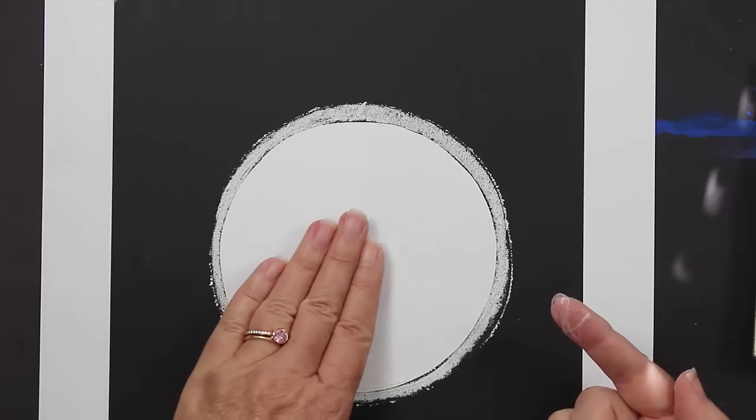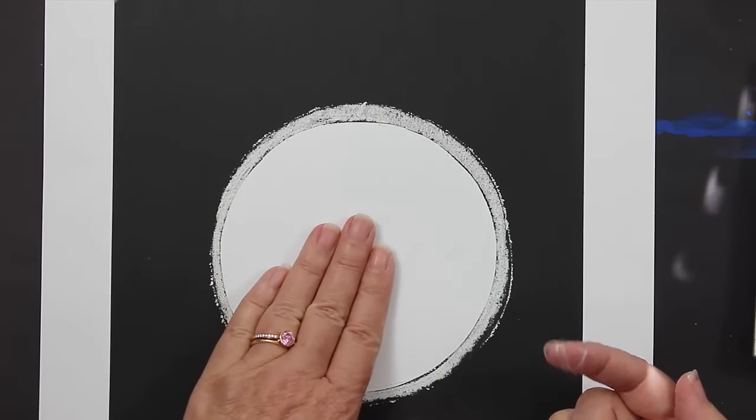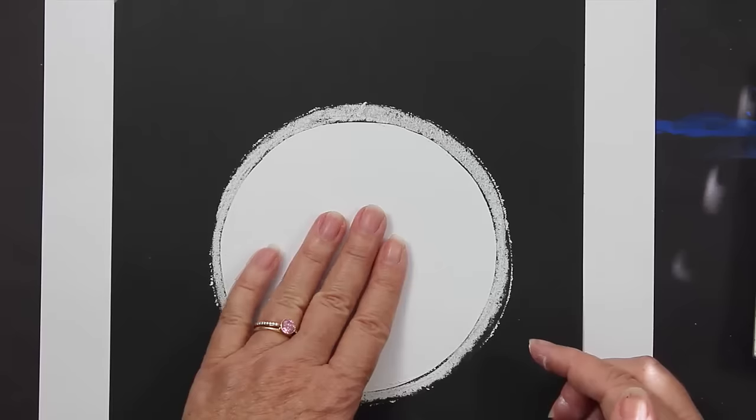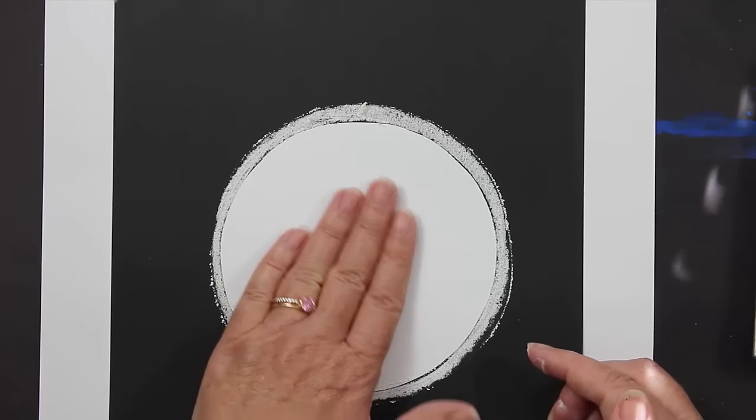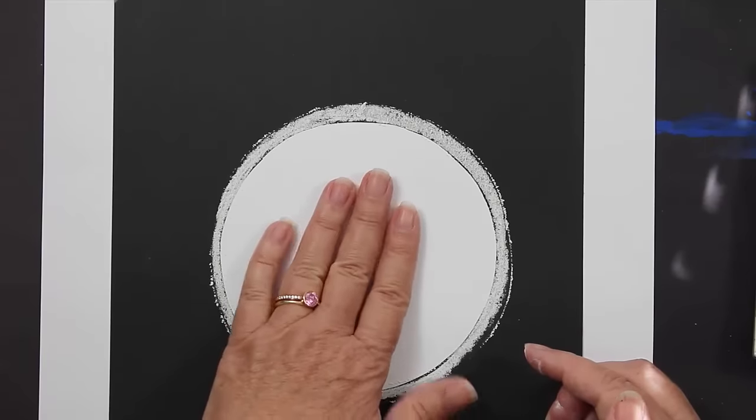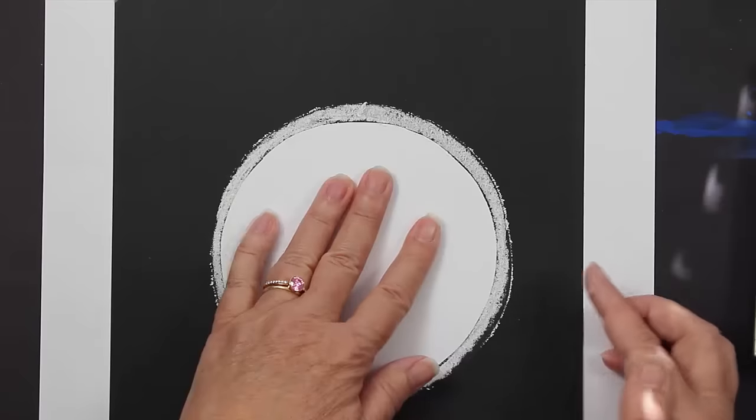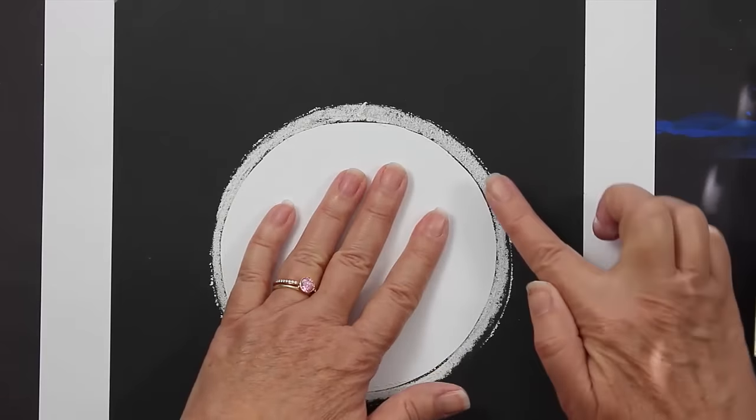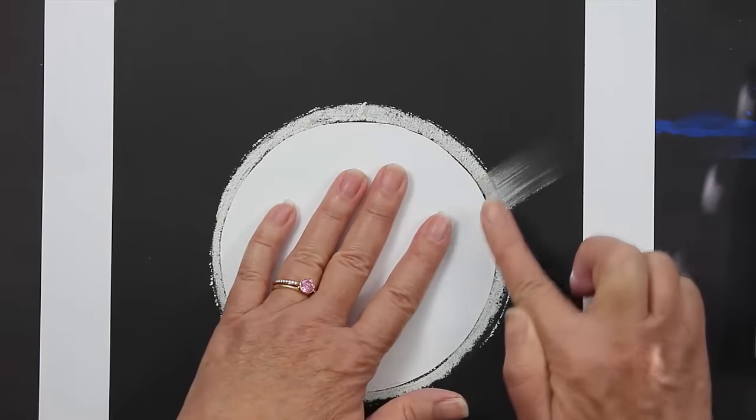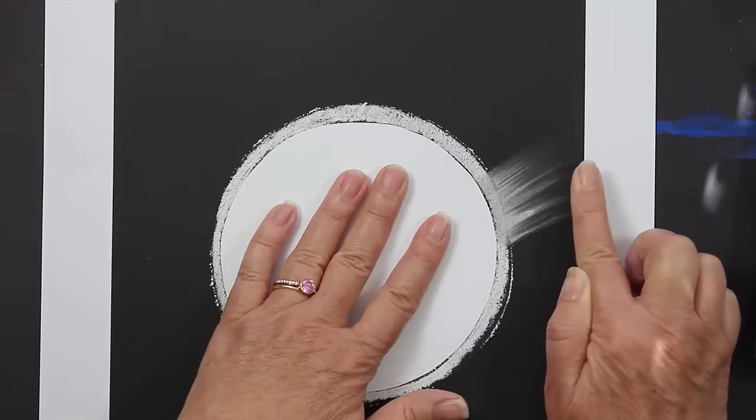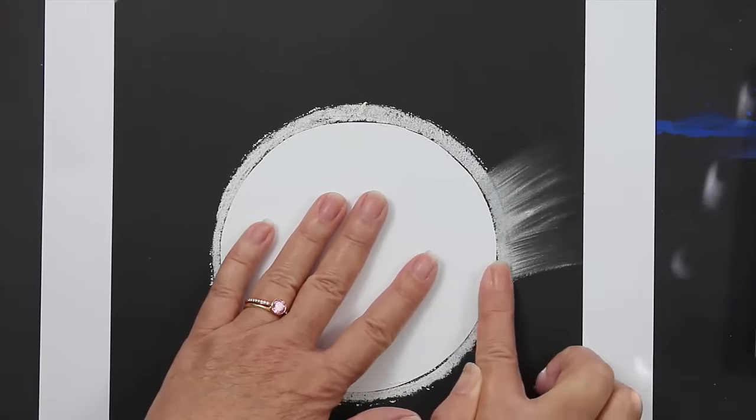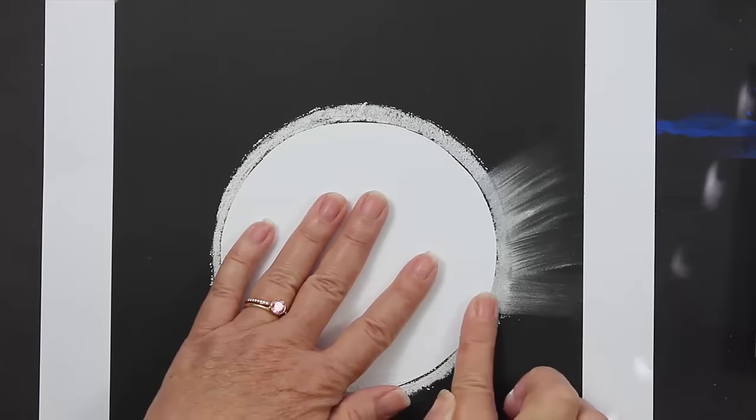Now all you do is you take your finger, and you hold your piece of paper down with the finger that you're not going to use to spread your chalk. And if you don't hold it down, sometimes this could slip around and then your artwork will not turn out like a solar eclipse. So hold that down and take your finger and just pull out like that. See how cool that is? Just pull out.